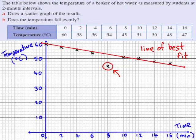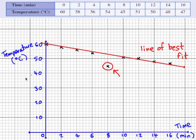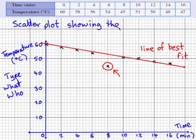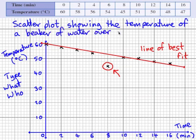Finally we need a title for our graph. Remember type, what, who. The who doesn't always work but you should still be looking for three pieces of information. This is a scatter plot showing the temperature of a beaker of water over a 16 minute period.